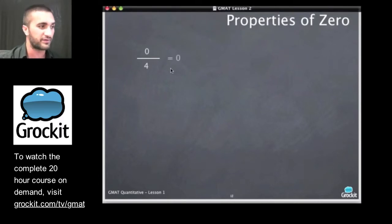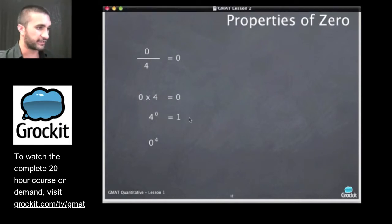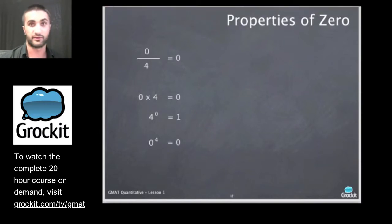0 divided by 4. Everyone give me your answer. It should be 0. That seems pretty straightforward. It gets a little more complicated when we have to remember it the other way. So 0 times 4, 4 to the 0, and 0 to the 4. What are the rules here? If I multiply anything by 0, I should get 0. What happens when I raise something to the 0 power? It always becomes 1. When you raise some number to the 0 power, the answer is 1. And 0 to any power is going to give us 0.